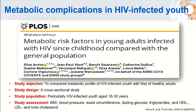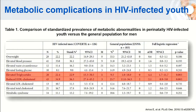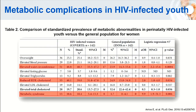This study compared metabolic complications among perinatally HIV-infected adolescents and young adults to the general population. HIV-infected men had significantly increased triglyceride levels and reduced HDL cholesterol compared to general men in the same countries. Similarly, HIV-infected women showed significantly increased waist circumference, reduced HDL cholesterol, and increased incidence of metabolic syndrome compared to the general population.